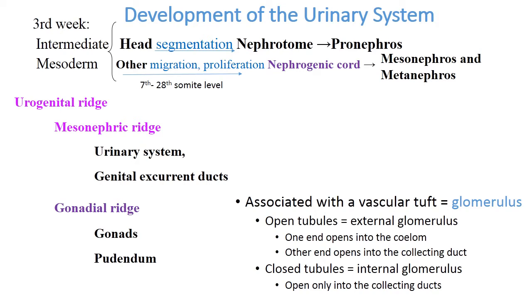The elevation of mesoderm — the urogenital ridge — consists of two parts: the mesonephric ridge, which gives rise to the urinary system, and the gonadal ridge, which gives rise to gonads and the genital system.